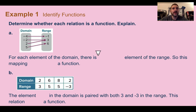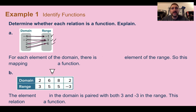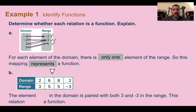Example 1 — identify functions: determine whether each relation is a function. For part a, each thing in the domain has to go to only one thing in the range. This one goes to one, negative two only goes to three, positive two also goes to three — that's fine — and the last one only goes to six. This is a function because for each element of the domain there's only one element in the range.